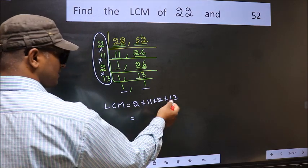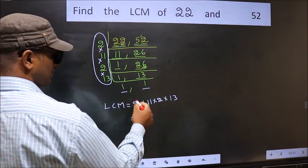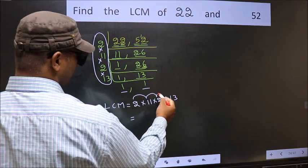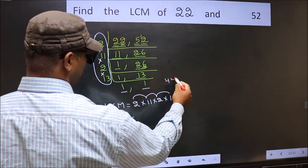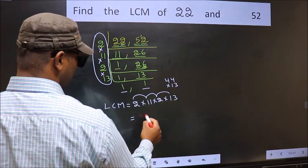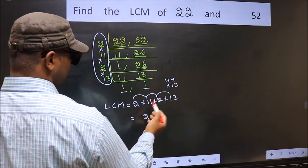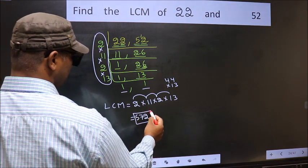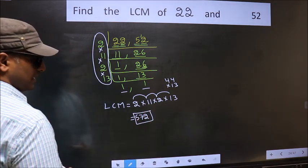So let us multiply these numbers. 2 × 11 = 22, 22 × 2 = 44, 44 × 13. 13 times 4 is 52, carry 5. 13 times 4 is 52 plus 5 is 57. So 572 is our LCM.